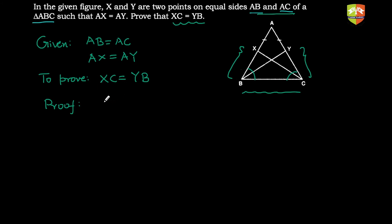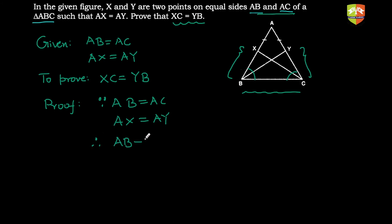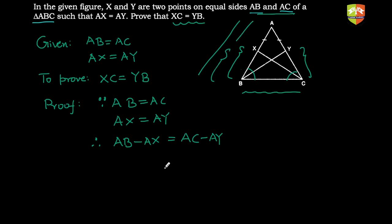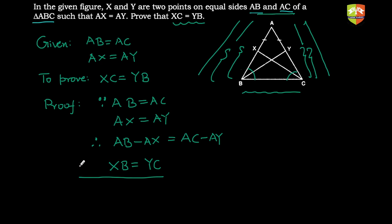Since AB equals AC (given) and AX equals AY (given), therefore AB minus AX equals AC minus AY. Now, AB minus AX gives us XB, and AC minus AY gives us YC. Therefore, XB is equal to YC.